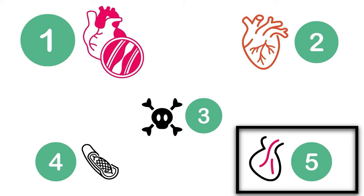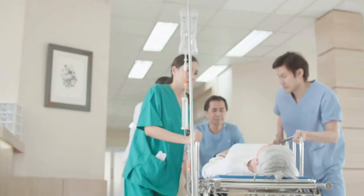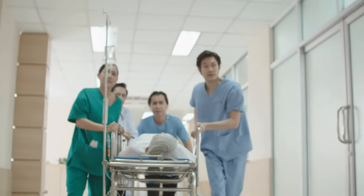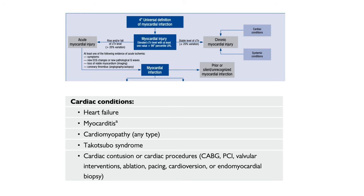Troponin elevation is essential to diagnose MI, but clinicians are frequently called for patients with non-cardiac or vague conditions who also have troponin elevation. Isolated troponin elevation without symptoms of ischemia or new ECG changes is known as myocardial injury — a distinct entity representing troponin release due to mechanisms other than myocardial ischemia and not meeting MI criteria. Cardiac causes include heart failure, myocarditis, cardiomyopathy, Takotsubo syndrome, cardiac contusion, CABG, PCI, valvular intervention, ablation, cardioversion, or endomyocardial biopsy.